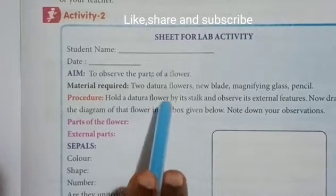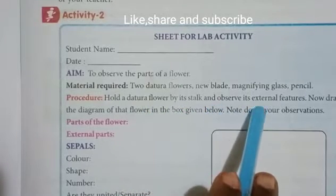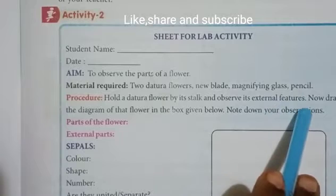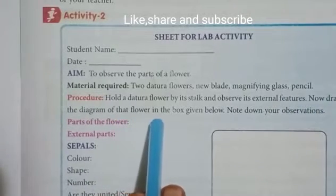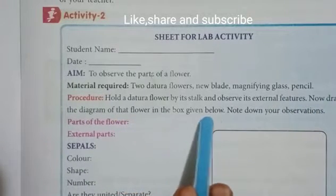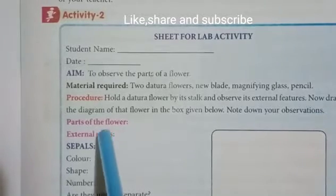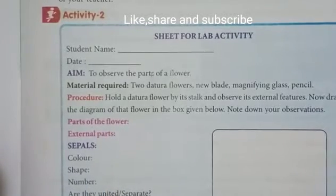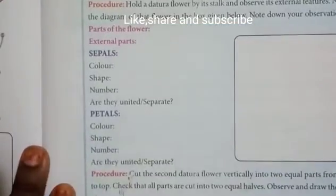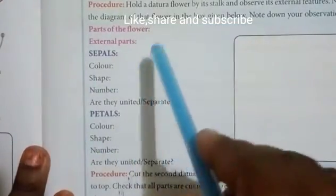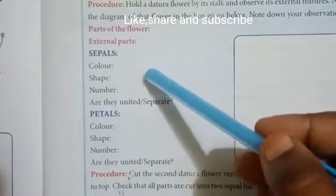Now draw the diagram of the flower in the box given below and note down your observations. Clearly observe the datura flower and write down details about it — how is the sepal, what is the color, what is the color, and what is the shape.